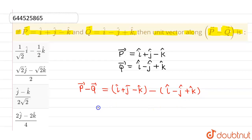Now if I perform this subtraction operation, I will be getting P vector minus Q vector as: this i will cancel out so I will be getting 0 i cap, this j minus negative j will give us 2 j cap, and this minus k minus k will give us minus 2 k cap.